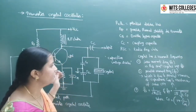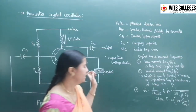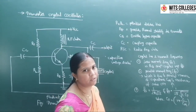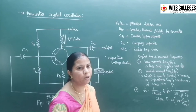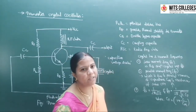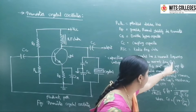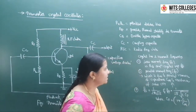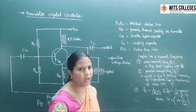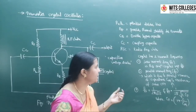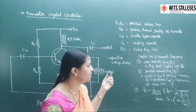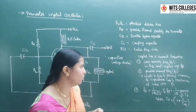For the crystal, it has two resonant frequencies. The first is the series resonant frequency, indicated by Fs. In this condition, the crystal impedance is very low.